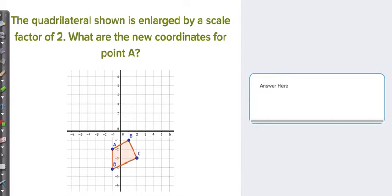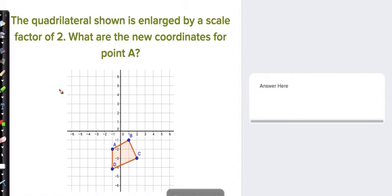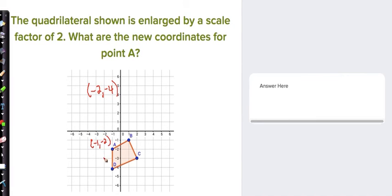This brings us to the last question, number 7. The quadrilateral shown is enlarged by a scale factor of 2. What are the new coordinates of point A? You only have to dilate point A. A starts at (-1, -2). Because the scale factor is 2, multiply each coordinate by 2: you get (-2, -4). Make sure you have the parentheses and comma between the two numbers. That concludes our Ed Puzzle on dilations. I hope you have a great day.